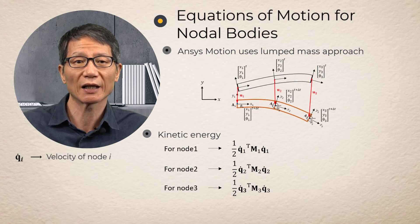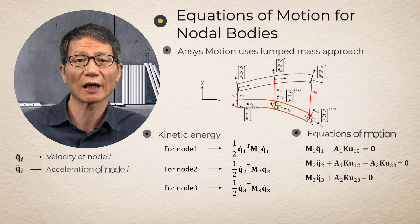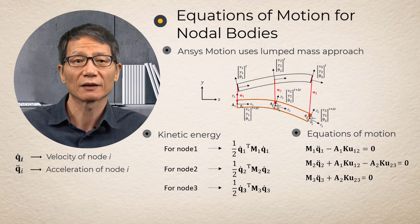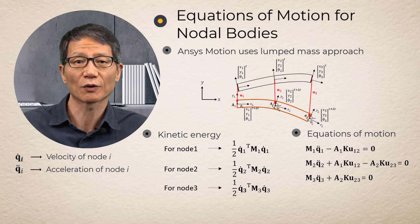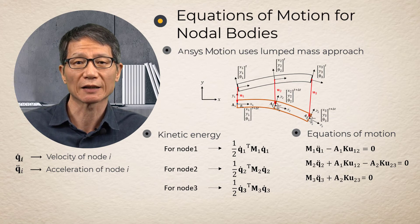Considering the strain and kinetic energies for the example, the equations of motion are obtained as in this equation. Note that the action and reaction forces for a beam element are paired in the equations of motion for two adjacent nodal bodies.